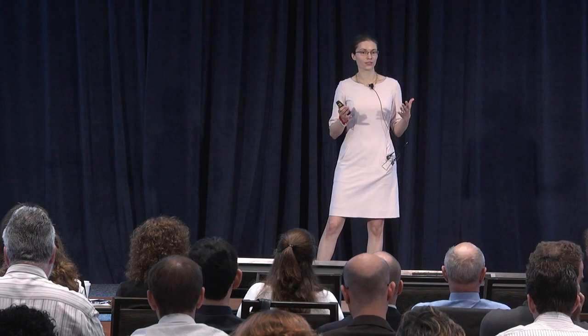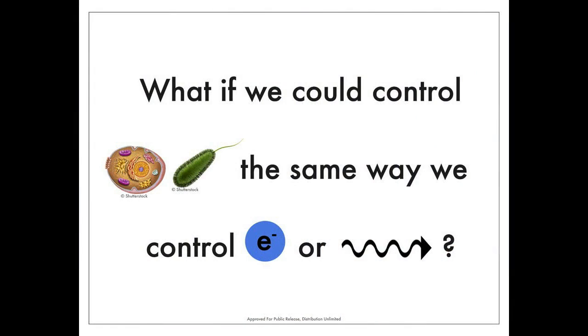I'm trained as a physicist, and so the first kind of question I want to ask is: how can we control cells in the same way that we control electrons and photons? What capabilities do we need to build in order to make this a reality, and why can't we do this already?